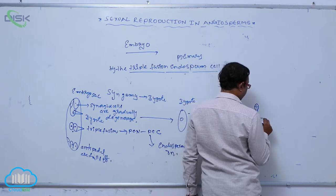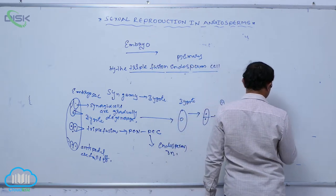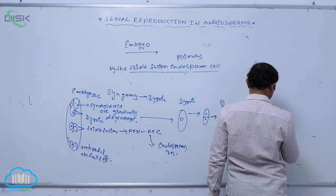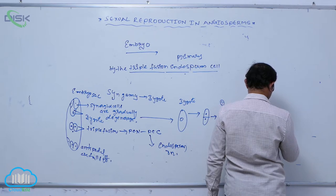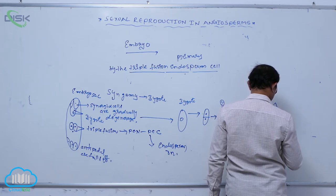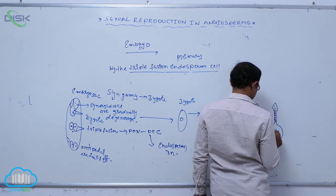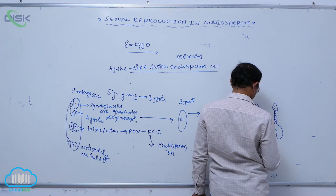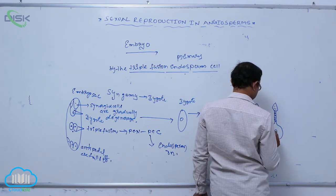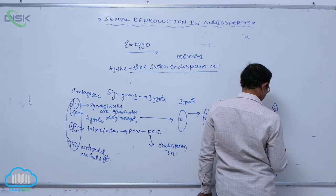After the globular embryo, it is converted to the heart-shaped embryo. So it is a pro-embryo, then globular embryo, after that it is known as heart-shaped embryo.